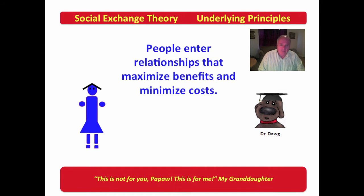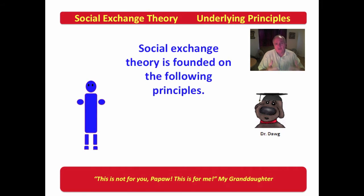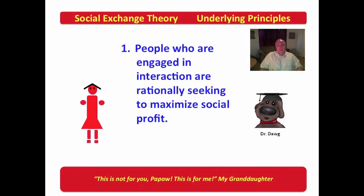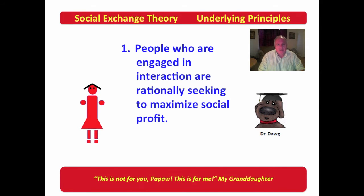People in a relationship certainly maximize benefits and minimize cost. The first principle: people who are engaged in interaction are rationally seeking to maximize social profit. The key word here is rational. This is very different from the behaviorist approach that sees the environment as controlling behavior. What Homans sees is the human mind working like a little computer — analyzing costs, benefits, and profit — so that the individual is rationally seeking to make decisions.